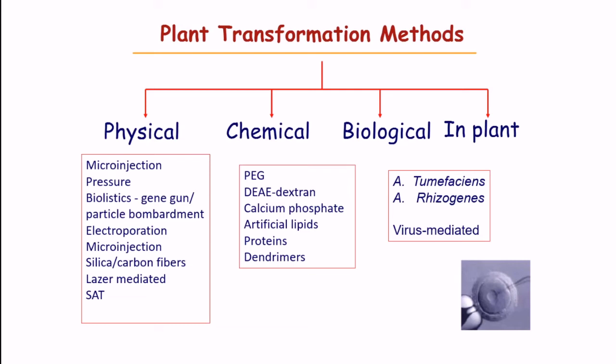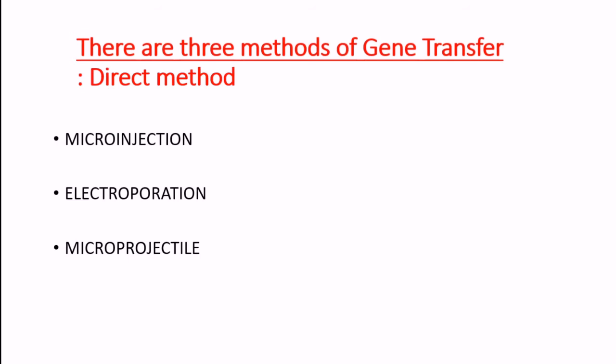We will be discussing three methods of gene transfer: first is microinjection using a pipette, with a holding pipette and a needle to inject; followed by electroporation; and microprojectile which is the particulate gun method.